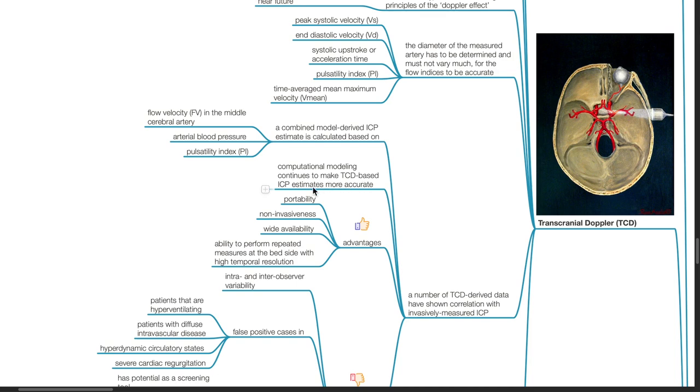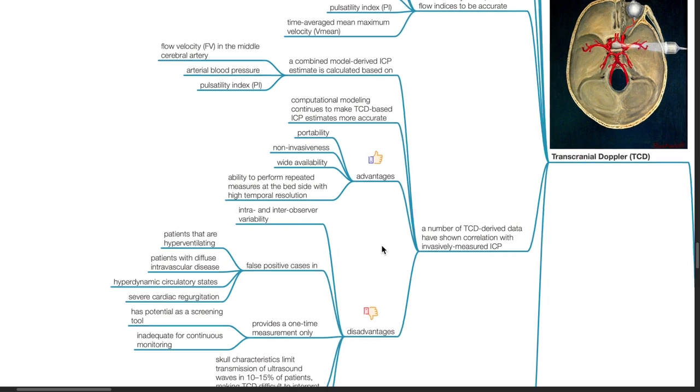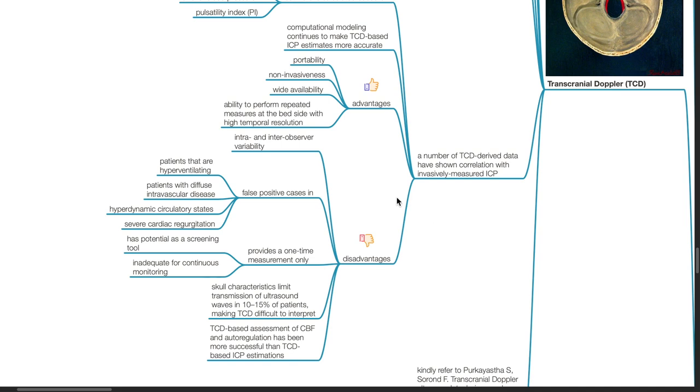A number of TCD derived data have shown correlation with invasively measured ICP. A combined model derived ICP estimate is calculated based on flow velocity in the middle cerebral artery, arterial blood pressure, and pulsatility index. Computational modeling continues to make TCD based ICP estimates more accurate. Advantages: It is portable, non-invasive, widely available, and has ability to perform repeated measures at the bedside with high temporal resolution. Disadvantages: intra and inter-observer variability, false positive cases in patients that are hyperventilating, patients with diffuse intravascular disease, hyperdynamic circulatory states, and severe cardiac regurgitation. It provides a one-time measurement only and has potential as a screening tool but is inadequate for continuous monitoring. Skull characteristics limit transmission of ultrasound waves in 10 to 15% of patients making TCD difficult to interpret. Overall, TCD based assessment of CBF and autoregulation has been more successful than TCD based ICP estimations.